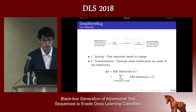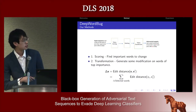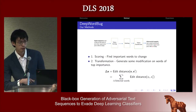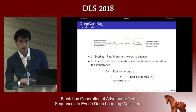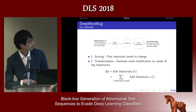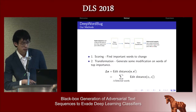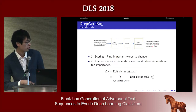Our method contains three parts: the scorer, the ranker, and the transformation. It first finds the important words and gives them a score, then generates a modification on those top-scored words. The final perturbation is defined as the summation of all the edit distance differences on every single word.